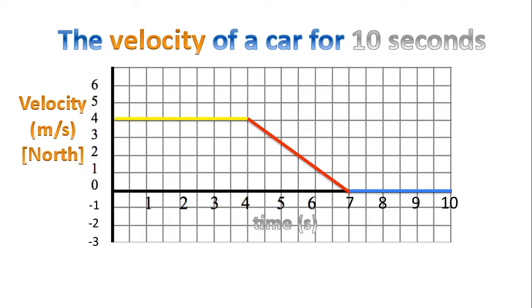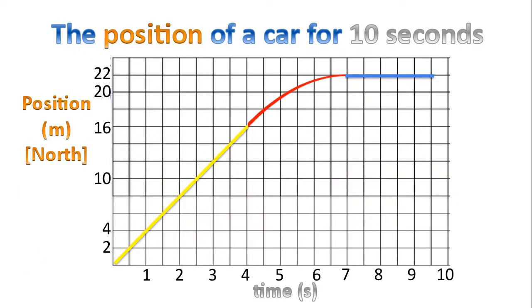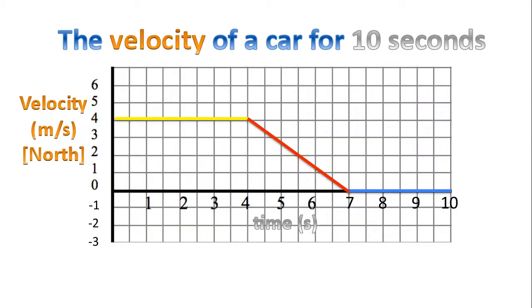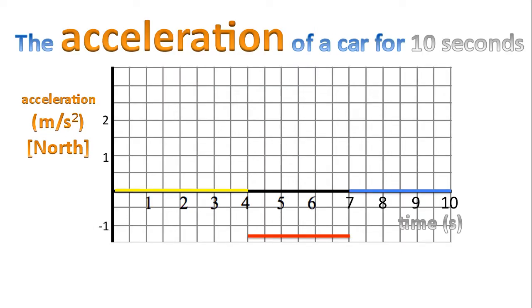So here's a velocity-time graph. In the previous video I showed you how to convert this velocity-time graph into a position-time graph. However, today we're going to take this velocity-time graph and ultimately convert it into this.